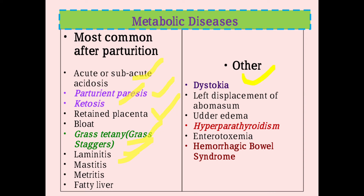Other metabolic diseases include dystocia (difficulty in parturition), left displacement of abomasum, udder edema, hyperparathyroidism, enterotoxemia, and hemorrhagic bowel syndrome. Enterotoxemia is a bacterial disease caused by Clostridium perfringens, most common in goats and sheep but can also occur in large cattle.